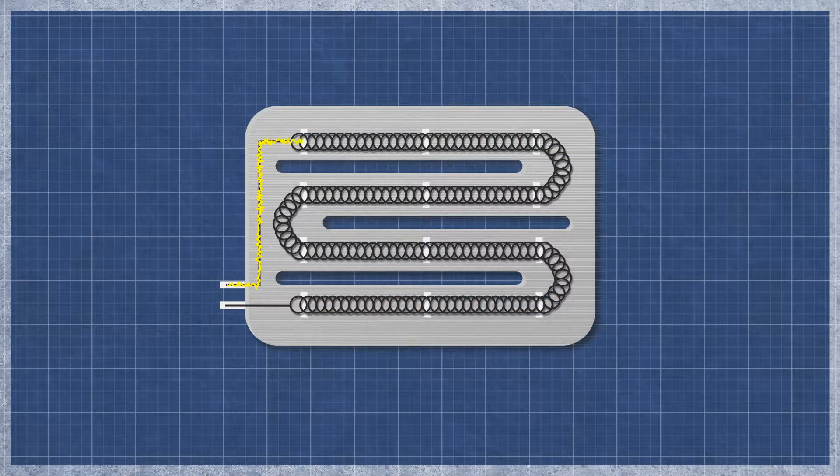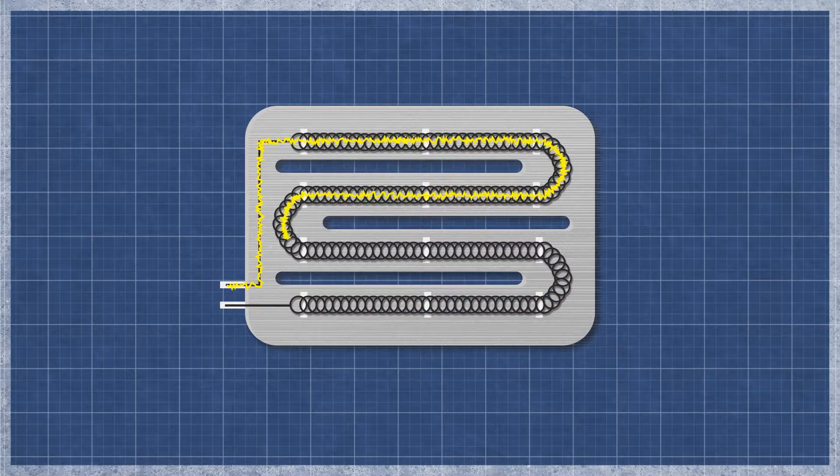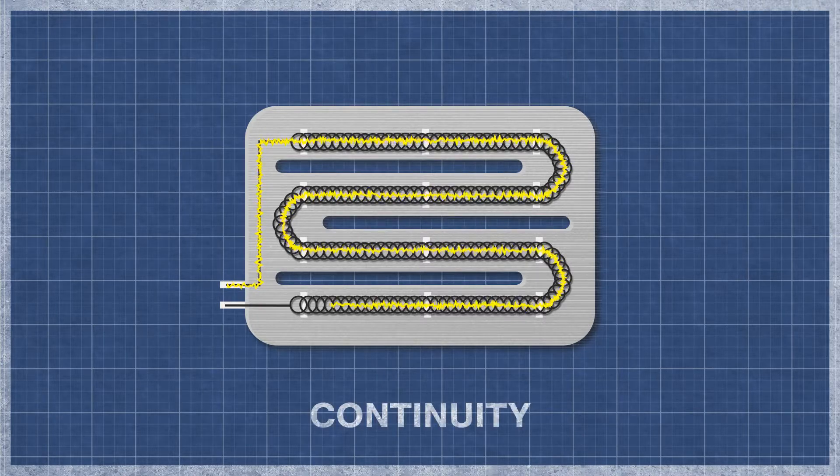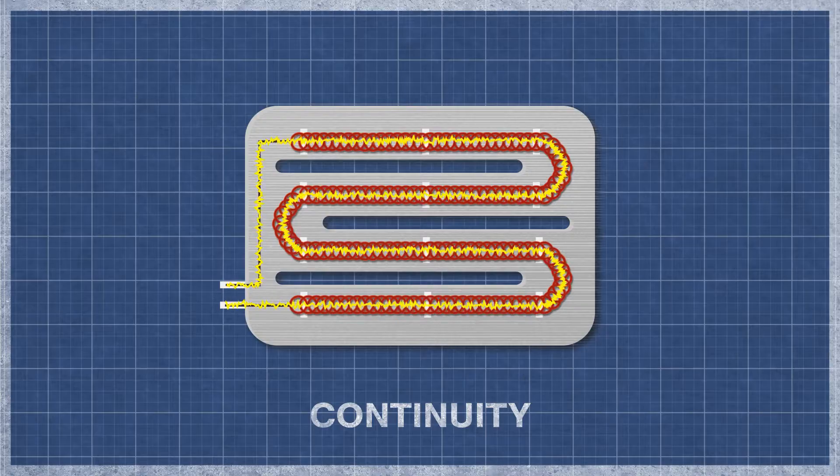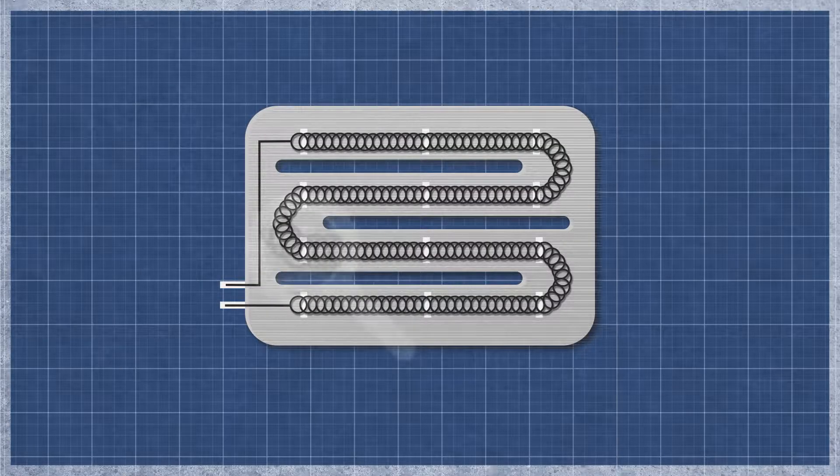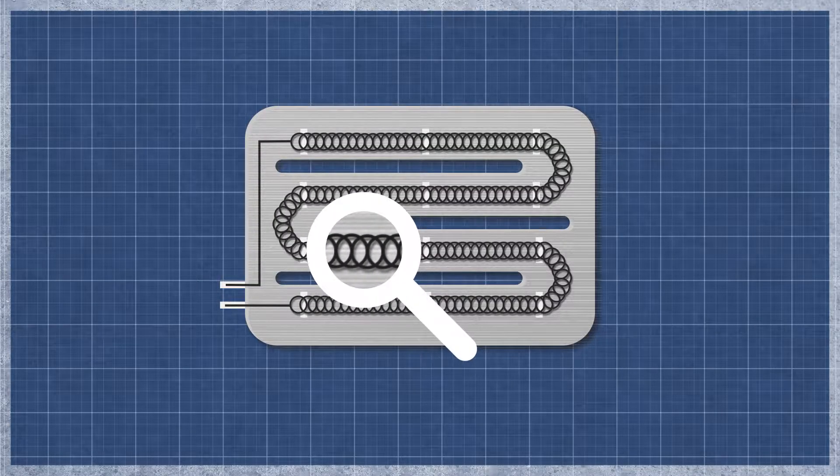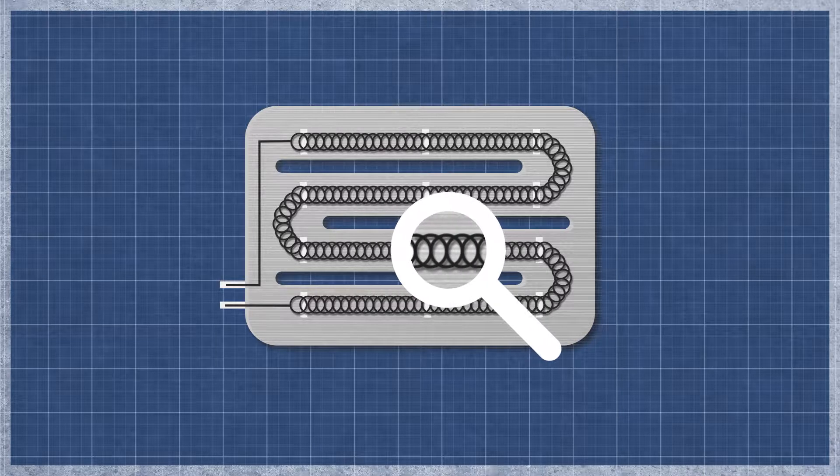A dryer heater works similarly to an incandescent light bulb. As electricity flows through the element, the resistance in the material generates heat. The element can burn out over time with normal use and may appear singed or cracked. This can be difficult to see as even a small break can cause an element to fail.